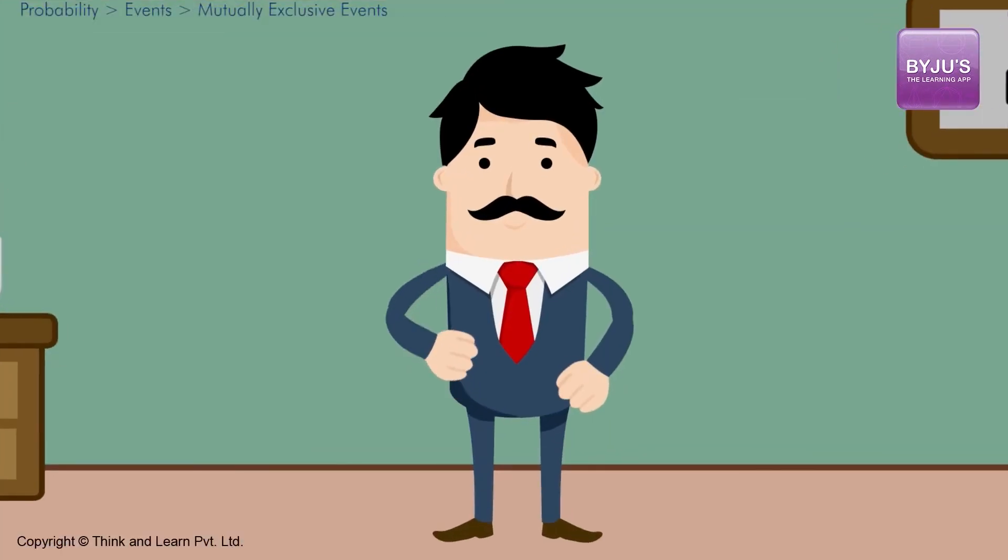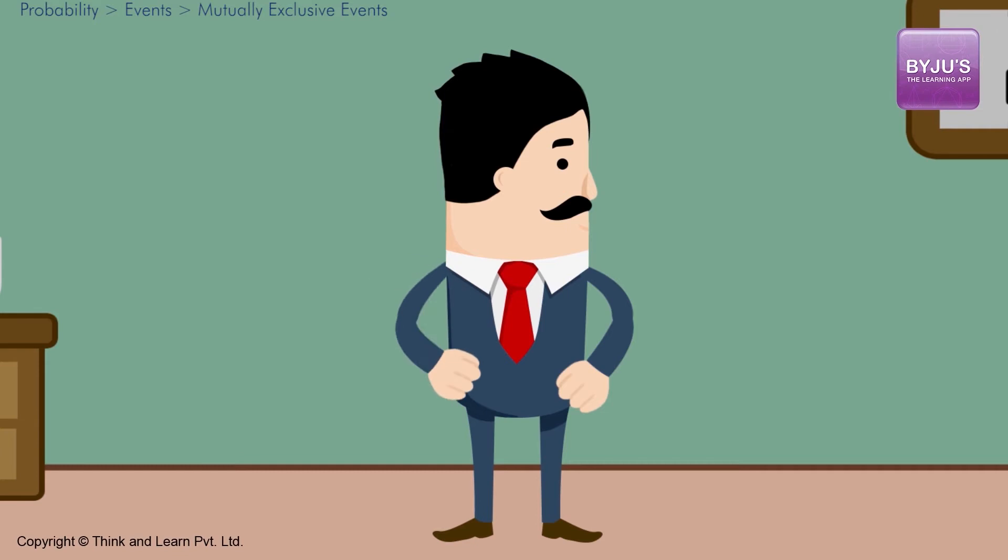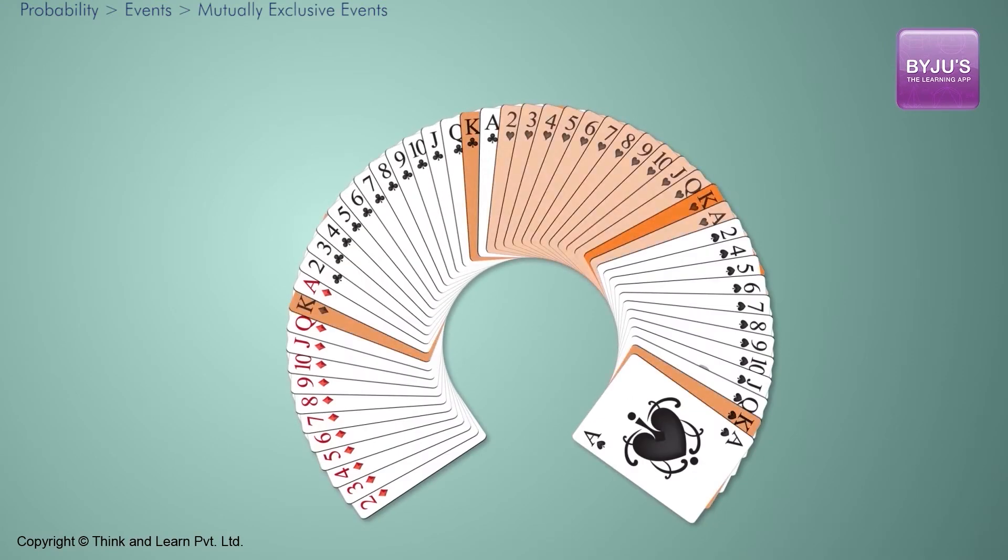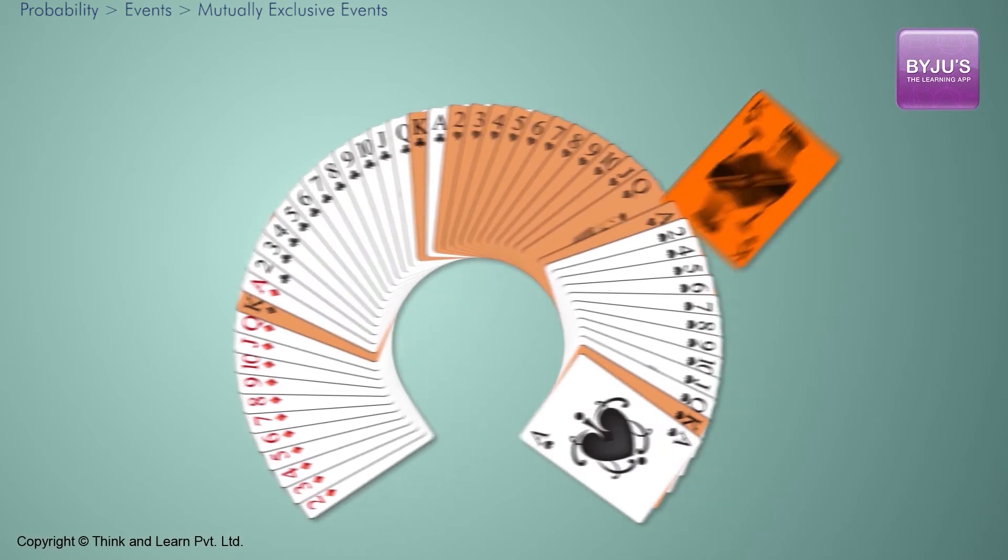Similarly, if I take some examples of not mutually exclusive events: turning left and scratching your head. Obviously, you can do it at the same time. So, that's a non-mutually exclusive event. If I take a pack of cards, kings and hearts are not mutually exclusive. That means I can have a king of hearts.